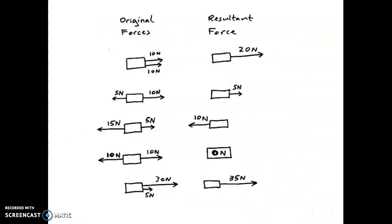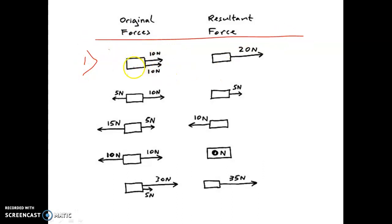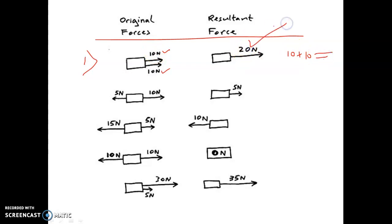How to calculate resultant force for different conditions: First case — when two forces act in the same direction, for example 10 Newton and 10 Newton, the resultant is P plus Q, which is 10 plus 10 equal to 20 Newton. Second case — when both forces are in opposite directions, 5 Newton and 10 Newton: the higher value is 10 Newton, so 10 minus 5 equals 5 Newton.